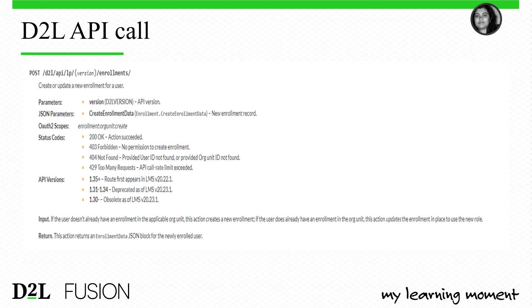For the D2L enrollment API call, the action is POST, which creates or updates an enrollment for a user. You pass CreateEnrollmentData as a JSON body and receive a status code back — 200 for success, or 403 Forbidden if you don't have permission to create the enrollment.